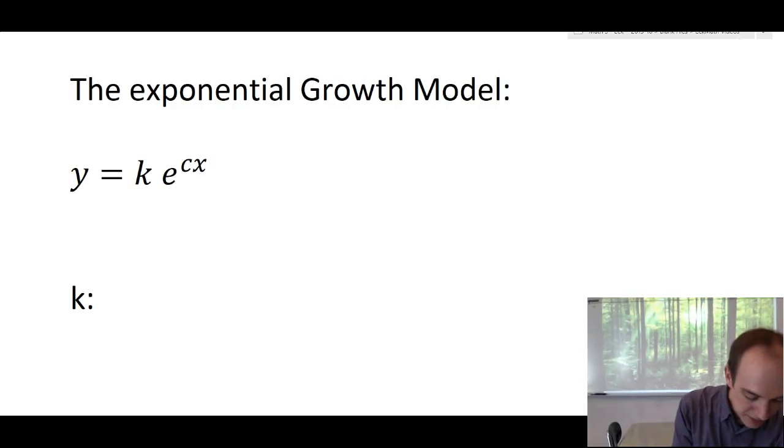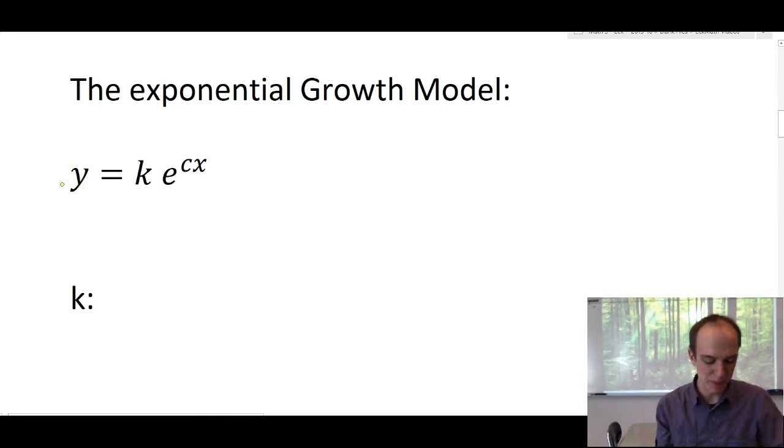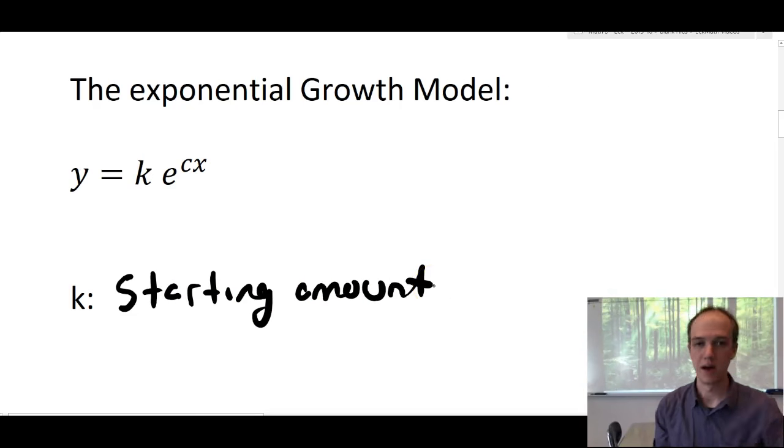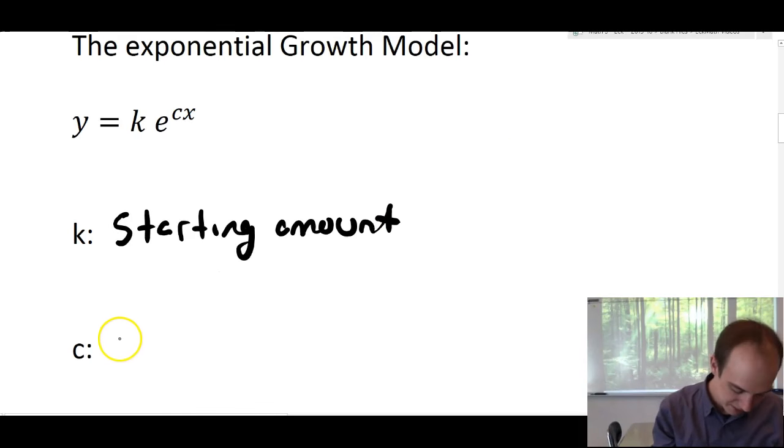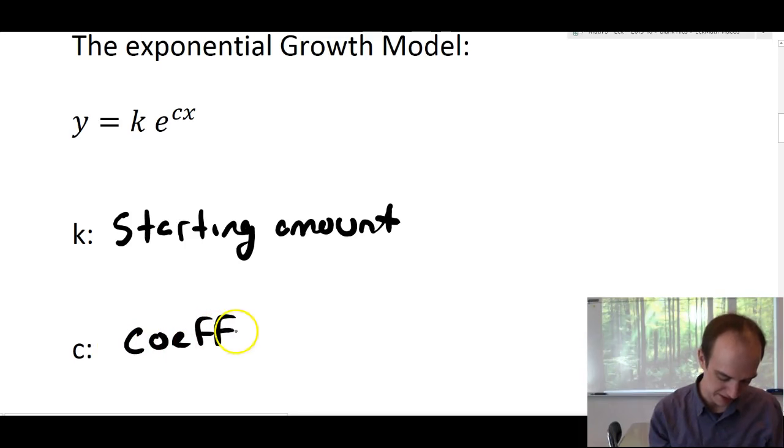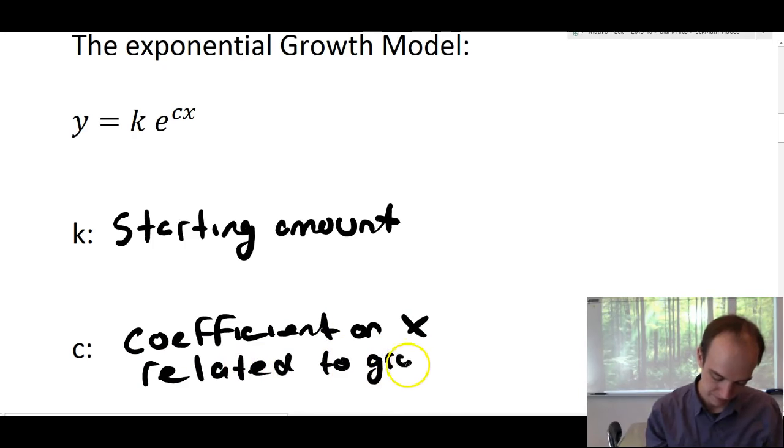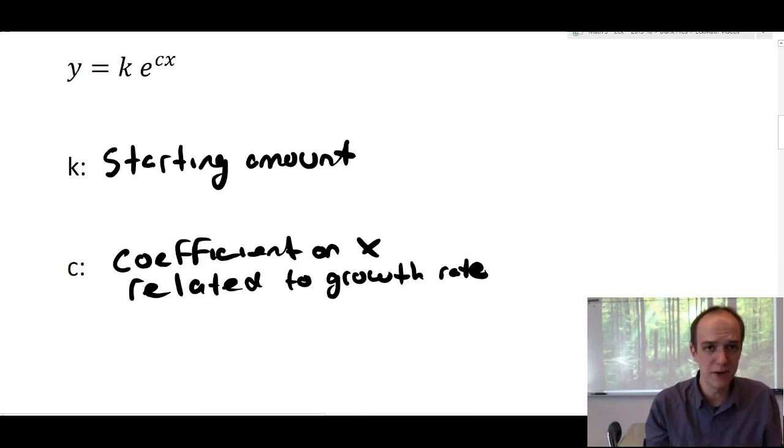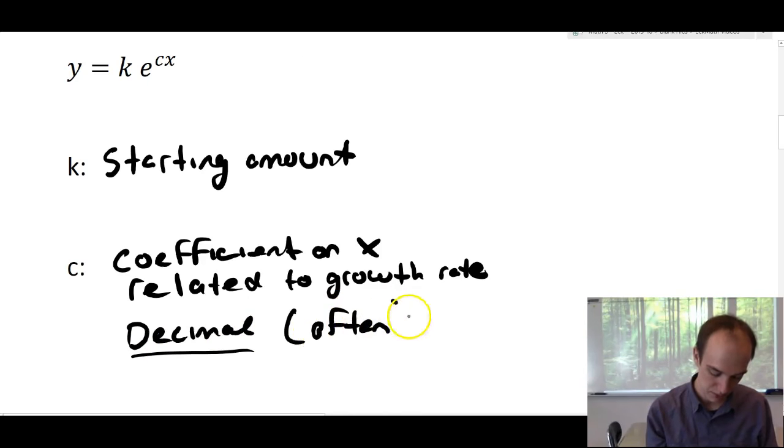Usually when you're modeling something with E, the model you use looks like this. Depending on the class you're in, you might use different letters, but we use the letters K and C. So K represented the starting amount of whatever it is, of whatever you had. And then the C represented, it was just a coefficient on X, we'll say, and we'll say it's related to the growth rate. And the K is usually a whole number because it's an amount of population or an amount of items, an amount of deer in the forest. C is frequently a decimal, not always, it's allowed to be a whole number, but frequently you'll find it as a decimal. Often, we'll say it's a decimal.